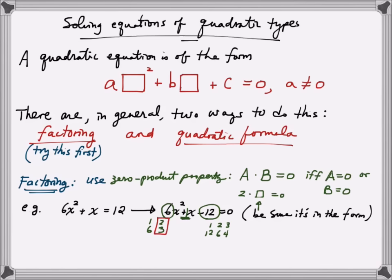Let's try the combination 2, 3 and 1, 12. I take 2 times 12 to get 24, and 3 times 1 to get 3. I need a negative sign somewhere to get a product of negative 12 — either next to the 1 giving negative 3, or next to the 12 giving negative 24. Either way, adding those two numbers won't give a middle term of 1, so this combination is wrong.